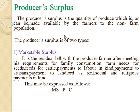feeds for cattle, payment to labor in kind, payments to artisans, payment to landlord as rent, and social and religious payments in kind. So marketable surplus equals total production minus family consumption and other needs. It is the residual left with the producer farmer after meeting his total requirements, and may be expressed as follows.